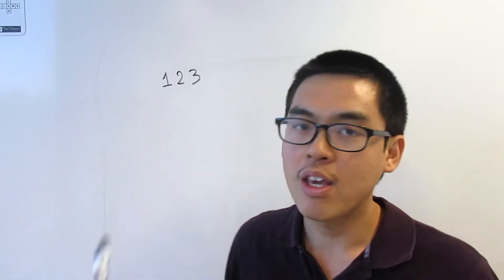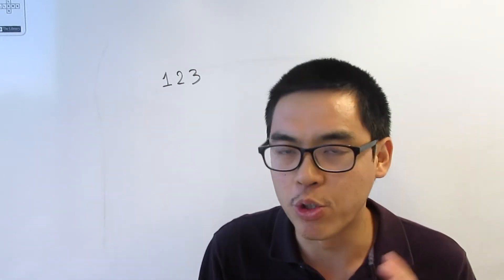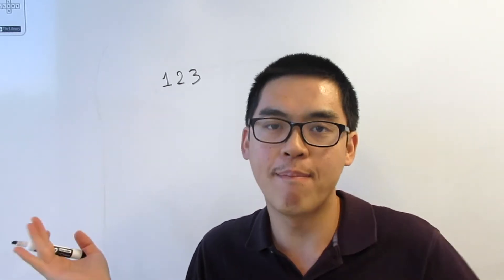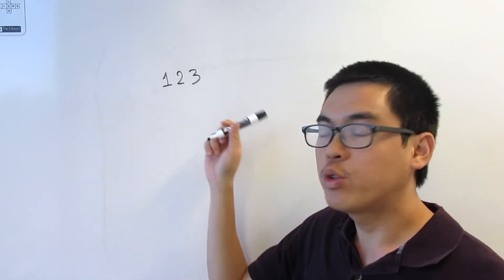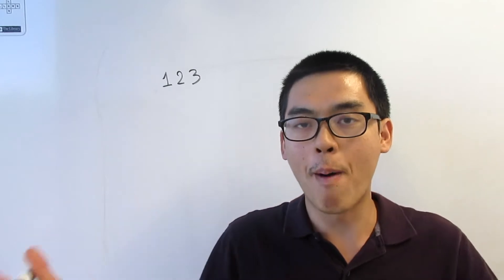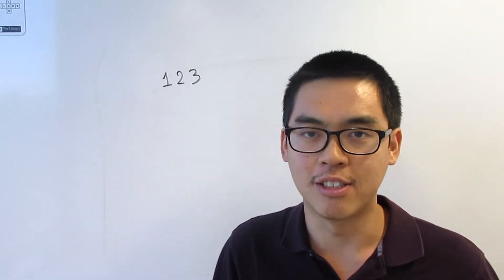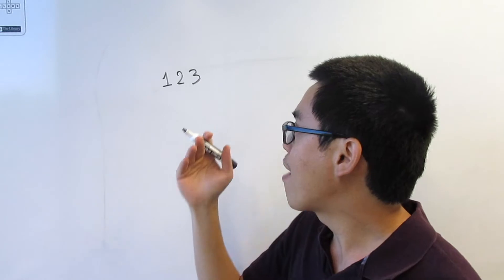One important thing about N choose K is we don't care about the order. So once you have one, two, three, you don't consider one, three, two as a different configuration — because you just put three shirts in your bag. It doesn't matter which one you put in first; you're going to pack all of them anyway. So one, two, three is considered the same as one, three, two, and you don't list one, three, two as another combination.